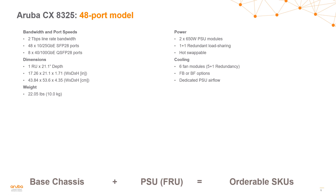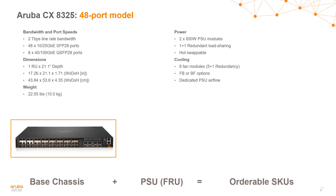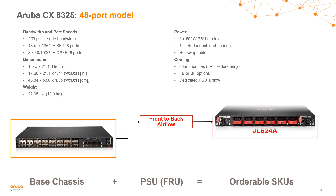When building out a solution using the 8325, we have both front-to-back and back-to-front airflow options, and they're two different SKUs because we package the switch altogether. So you don't have to purchase the power supplies and fan trays separately — you just purchase the single SKU. If you wanted a front-to-back airflow solution, you would purchase JL624A. The switch comes with both power supplies and all fans already installed. You'll notice the fans are actually color coded — red indicates the hot aisle, so the hot air is going to be coming out of these fans towards the back of the switch.